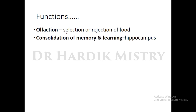Selection or rejection of food is based largely on smell sensation — food with a good odor is consumed, while food with a bad odor is avoided. Consolidation of memory and learning is also a function of the limbic system, with the hippocampus being the specific structure involved.